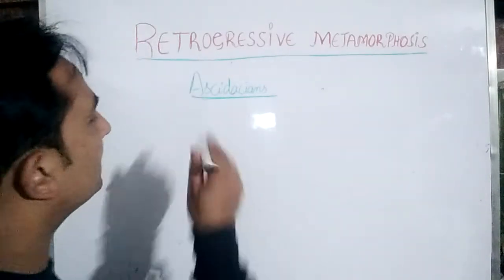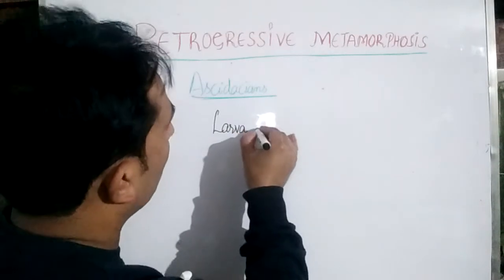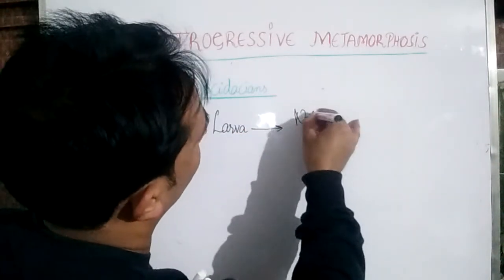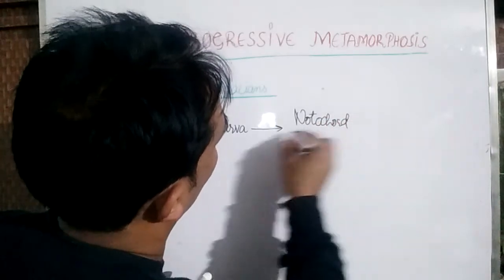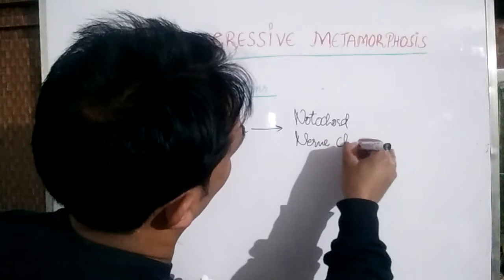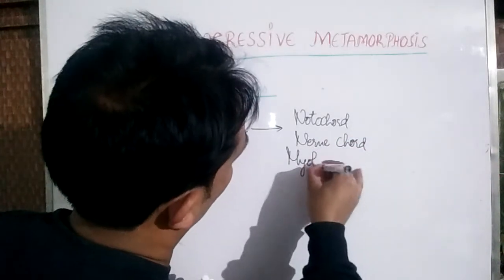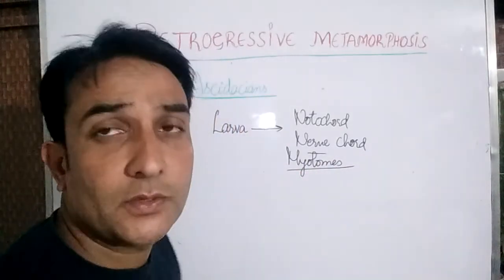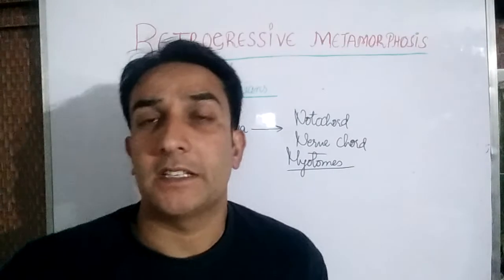The larva of these animals — the Ascidaceans — shows chordate characters like the presence of Notochord, Nerve cord, and Myotomes. So these are the chordate features we see in the larva of Ascidaceans.